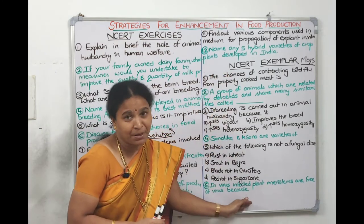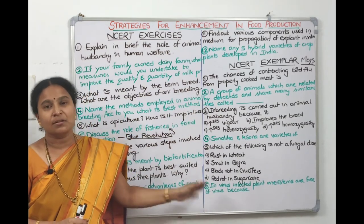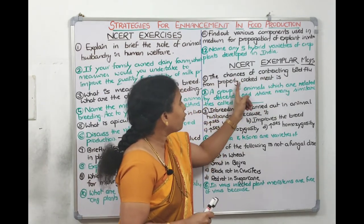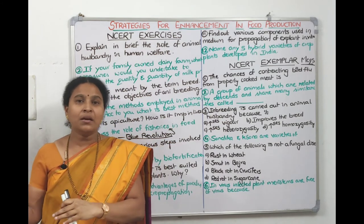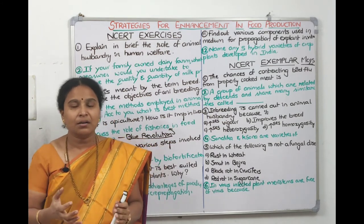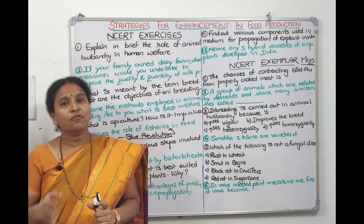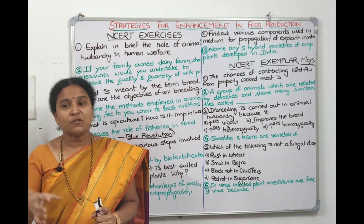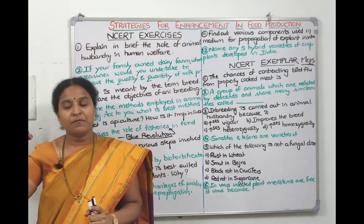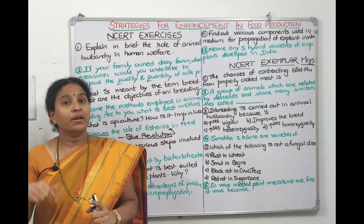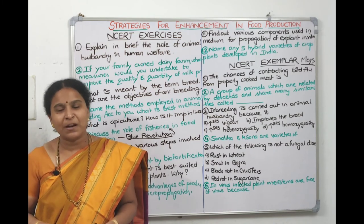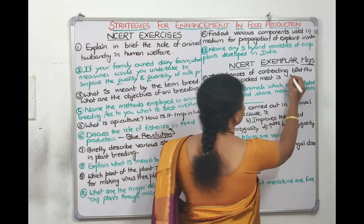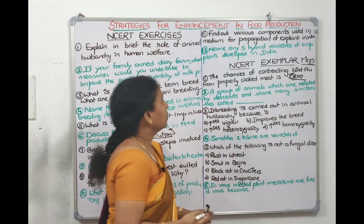Now coming to NCERT exemplar questions. First exemplar question: the chances of contracting bird flu from properly cooked meat. Even if a bird affected with bird flu is bought, the Indian style of cooking involves properly frying it. If you eat raw or partially cooked meat it might transfer, but if properly cooked, the chances are zero.